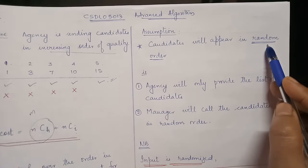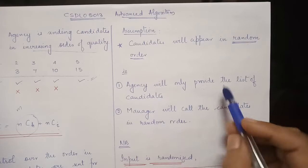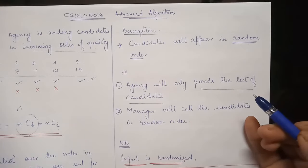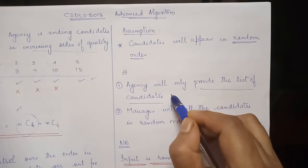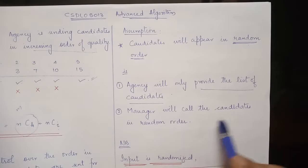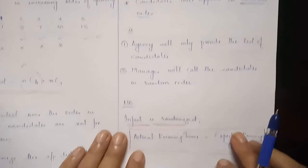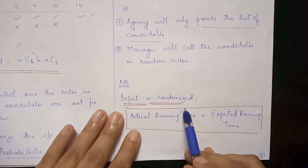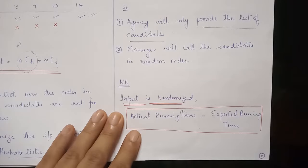What we do is ask the agency to provide a list of candidates — the agency can hide the rank — and the manager will call the candidates in random order. When the input is randomized, our actual running time is equal to the expected running time.